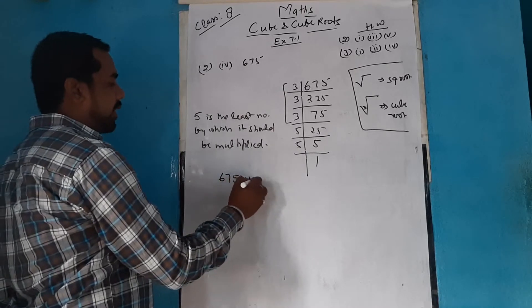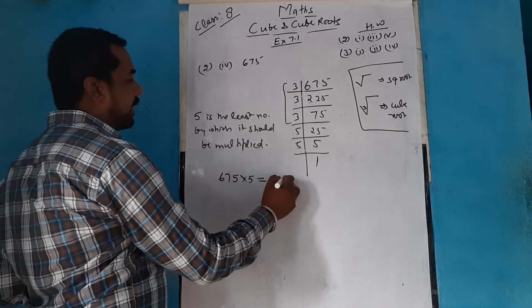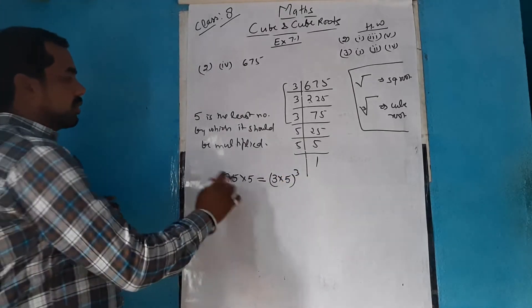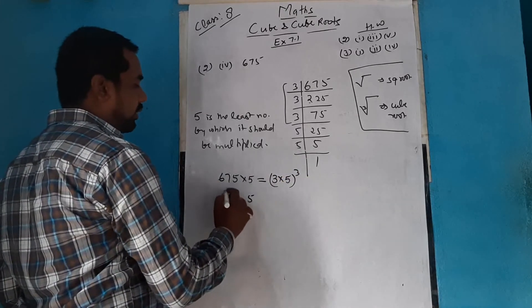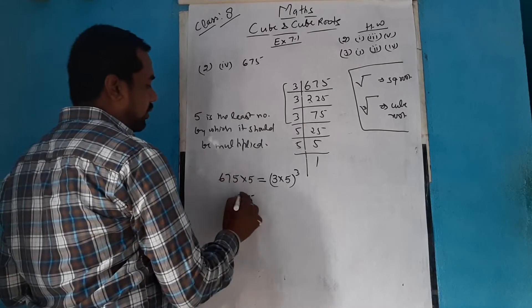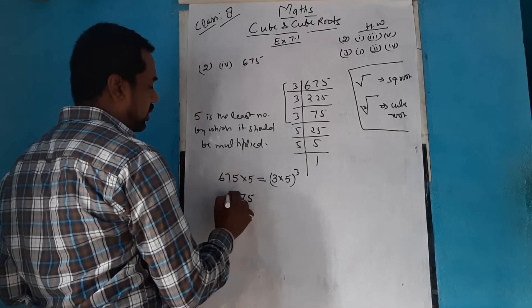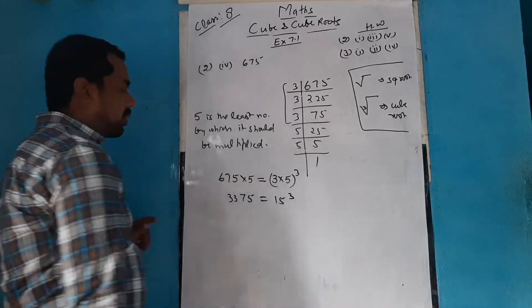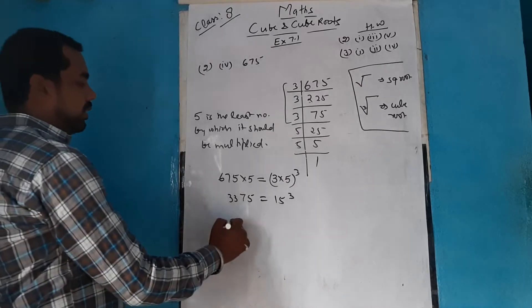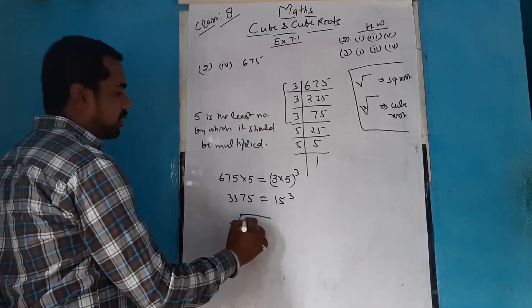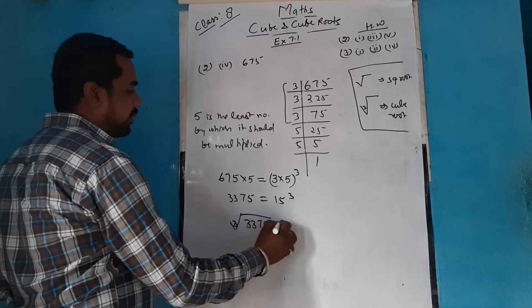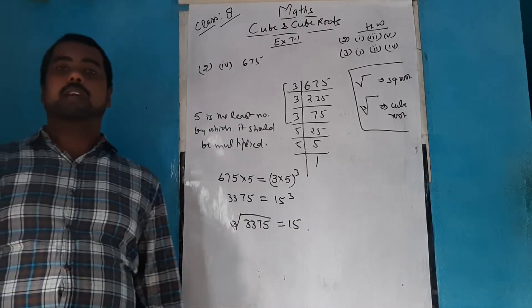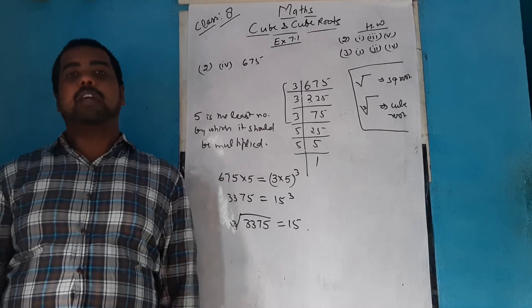When you multiply 675 by 5, the factors now form equal pairs of 3. So 675 × 5 = 3375, which equals 15 cubed. Therefore the cube root of 3375 is 15. This is how we find the least number to be multiplied to make a number a perfect cube.